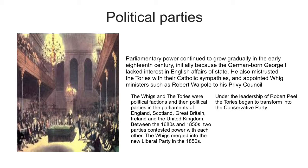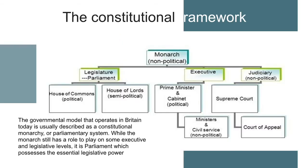The Whigs and the Tories were political factions and then political parties in the parliaments of England, Scotland, Great Britain, Ireland and the United Kingdom between the 1680s and the 1850s. The Whigs merged into the new Liberal Party in the 1850s. Under the leadership of Robert Peel, the Tories began to transform into the Conservative Party. The governmental model that operates in Britain today is usually described as a constitutional monarchy or parliamentary system. While the monarch still has a role to play on some executive and legislative levels, it is Parliament which possesses the essential legislative power, and the government of the day which governs by initiating and controlling political policy and legislation.